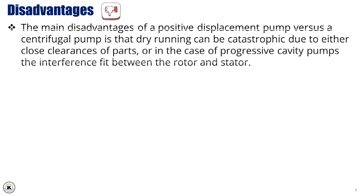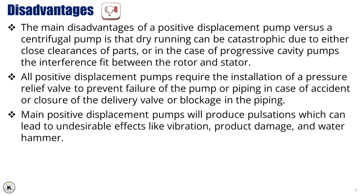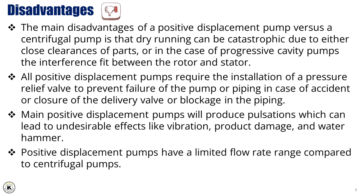Disadvantages: The main disadvantages of a positive displacement pump versus a centrifugal pump is that dry running can be catastrophic due to either close clearances of parts, or in the case of progressive cavity pumps, the interference fit between the rotor and stator. All positive displacement pumps require the installation of a pressure relief valve to prevent failure of the pump or piping in case of accidental closure of the delivery valve or blockage in the piping. Most positive displacement pumps will produce pulsations which can lead to undesirable effects like vibration, product damage, and water hammer. They also have a limited flow rate range compared to centrifugal pumps.